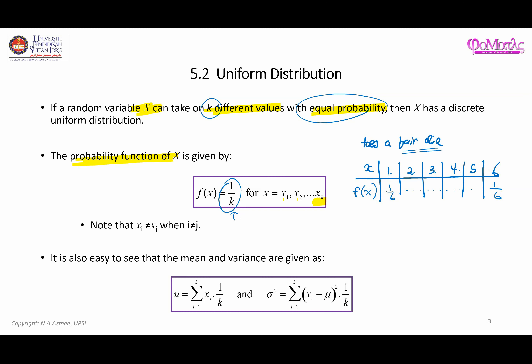It is also easy to see the mean and variance of the random variable x. The expected value of x — the mean — where x follows a uniform distribution is given by the formula shown here. And the variance of x is given by the other formula shown here.